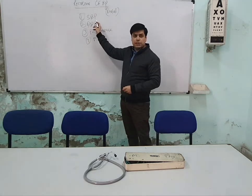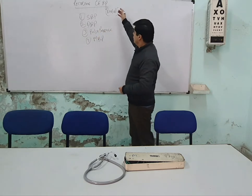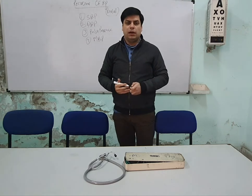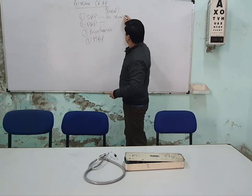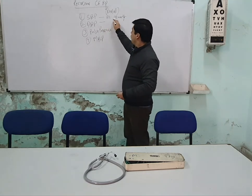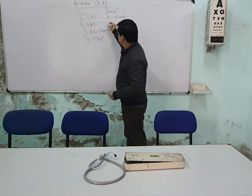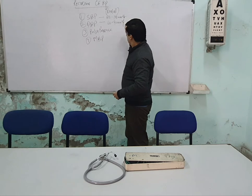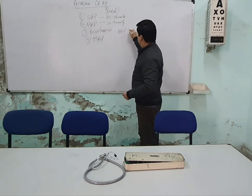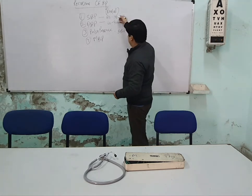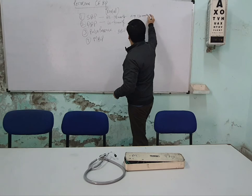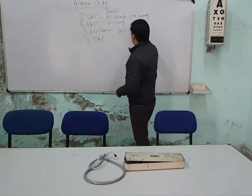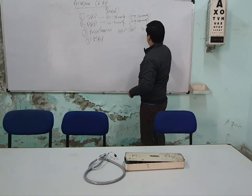Blood pressure is always expressed clinically as systolic blood pressure over diastolic blood pressure. Normal values for a young healthy adult: systolic BP ranges from 100 to 140 mmHg, with an average of 120 mmHg. Diastolic blood pressure ranges from 60 to 90 mmHg, with an average of 80 mmHg. The difference between them gives the pulse pressure, which is 40 mmHg.